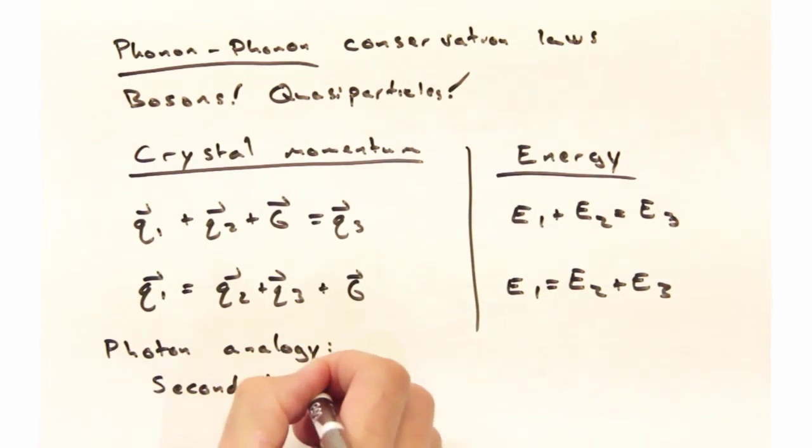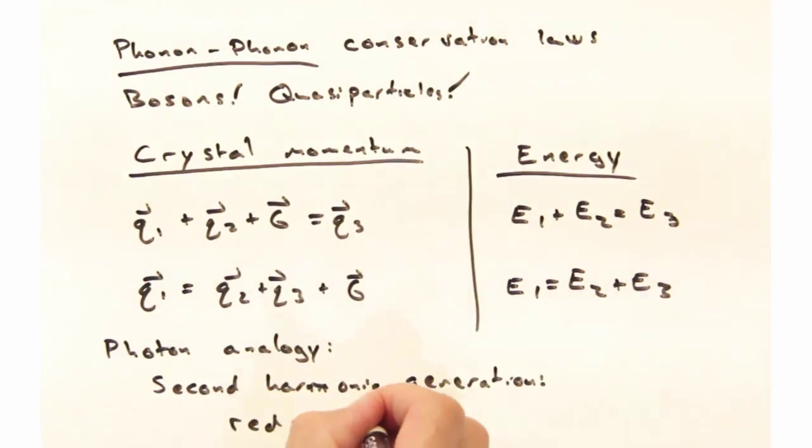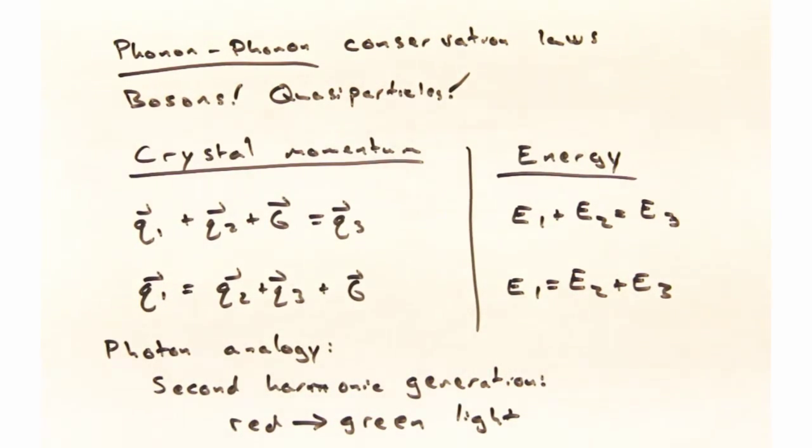If this whole business seems really creepy of phonons just becoming other phonons, we can think about the photon analogy, where we think about second harmonic generation. If I have two red photons and a material that's active for second harmonic generation, and I put those two photons into the crystal, there's a non-zero chance those two photons are going to combine and give me green light.